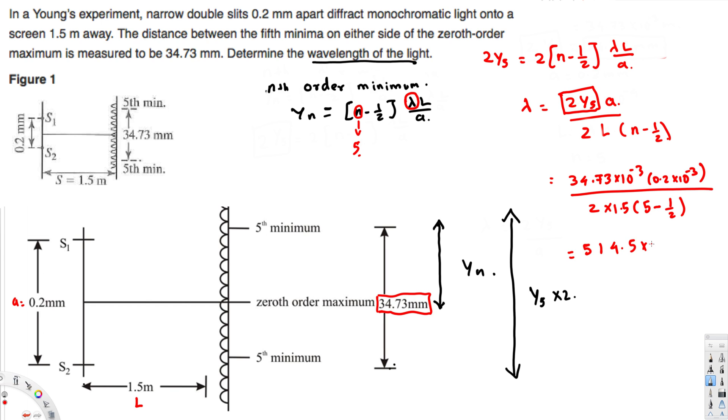So this is going to be 514.5 nanometers, and that's going to be the wavelength of the light. I hope this helps, thanks for watching.